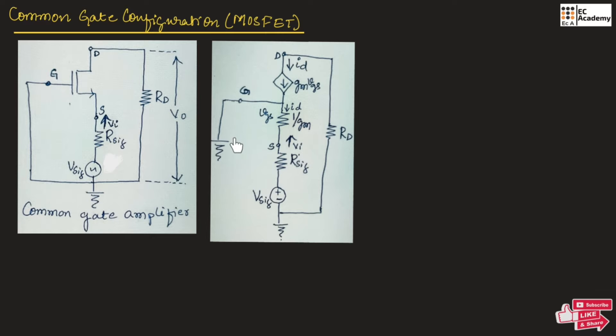This figure shows the T equivalent circuit which is a small signal equivalent of common gate amplifier. This part of the circuit is equivalent representation of MOSFET and remaining components are connected similar to this circuit.